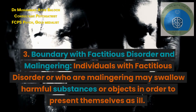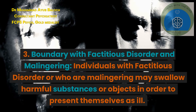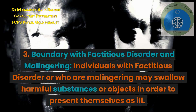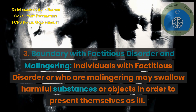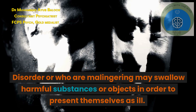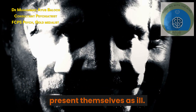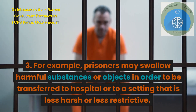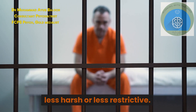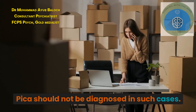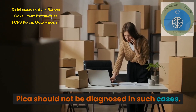Boundary with factitious disorder and malingering: individuals with factitious disorder or who are malingering may swallow harmful substances or objects in order to present themselves as ill. For example, prisoners may swallow harmful substances or objects in order to be transferred to a hospital or to a setting that is less harsh or less restrictive. Pica should not be diagnosed in such cases.